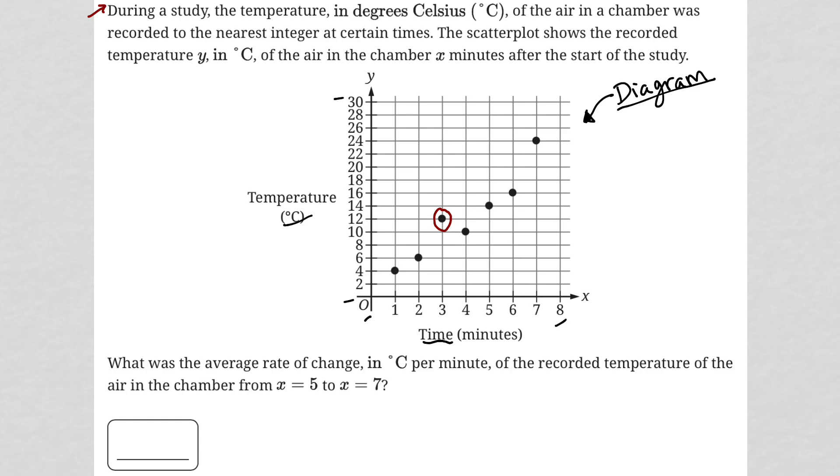What was the average rate of change in degrees Celsius per minute of the recorded temperature of the air in the chamber from x equals five to x equals seven? All right. So a couple of things here.